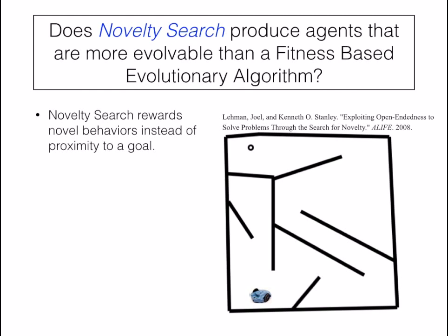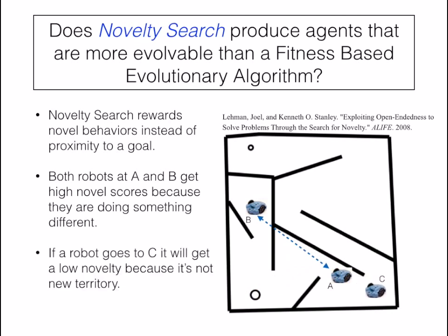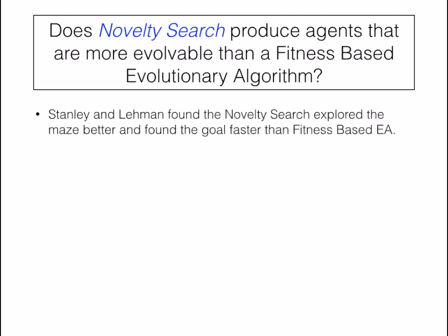NoveltySearch rewards controllers that exhibit novel behaviors instead of simply proximity to the goal. So if we had two controllers — one that sent a robot to point A and one that sent a robot to point B — then these two controllers would both be novel, because they're sending robots to different parts of the maze and exploring different areas. Now, if we had another controller that sent a robot to point C, this controller wouldn't be very novel because it's so close to point A and isn't really exploring new territory.